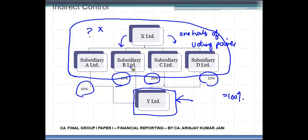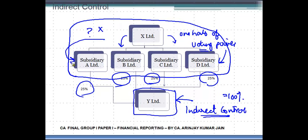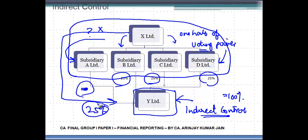So X Limited has control over A, B, C, and D, and A, B, C, D taken together have control over Y Limited. The case of Y Limited is known as indirect control, where you don't own more than one half of the voting power yourself, but your subsidiaries taken together own that voting power. There can be several variants — for example, X itself may hold 25% and the subsidiaries hold the rest.